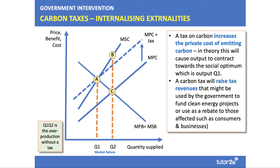A carbon tax will, in theory, generate some tax revenue which could be used by the government. It could be hypothecated — for example, dedicated or earmarked — to fund clean energy. Or it could be used as a rebate to affect those impacted by the carbon tax. If you're drawing a good analysis diagram for your assessments, don't forget to include the carbon tax revenue in your diagram.